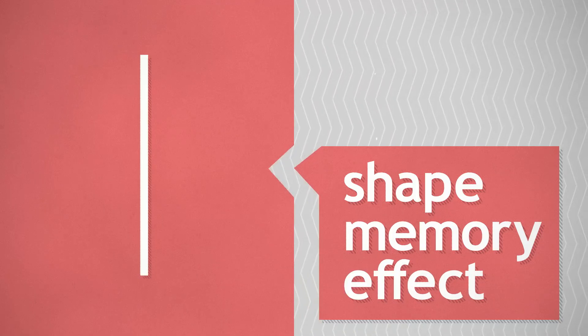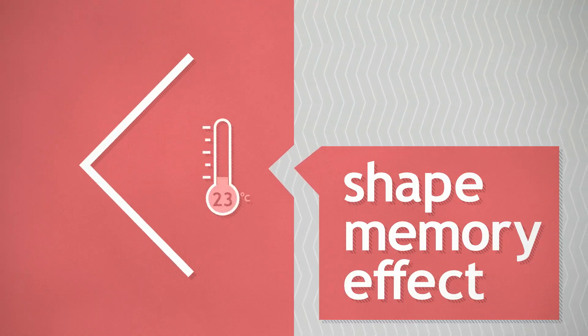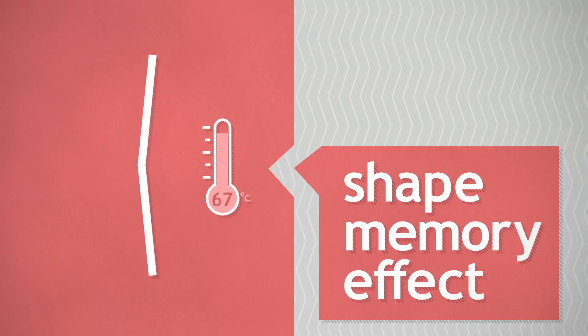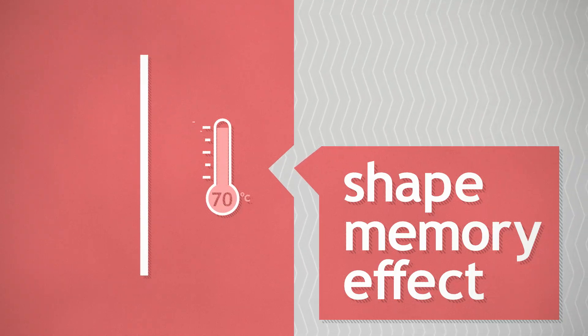Shape memory effect is the ability of the metal to remember a shape at a certain temperature. Even after it's deformed, the metal will transform back to that memorized shape at that specific temperature.